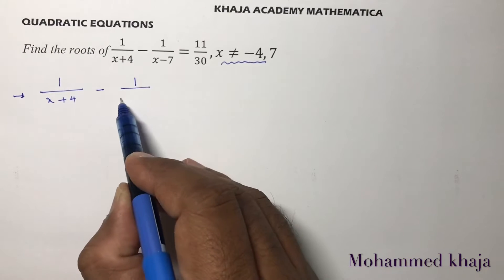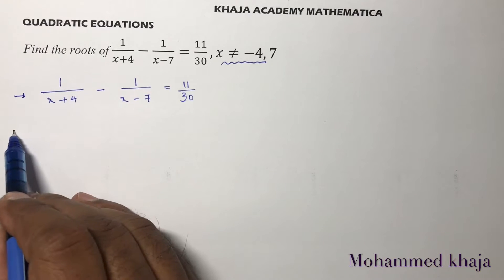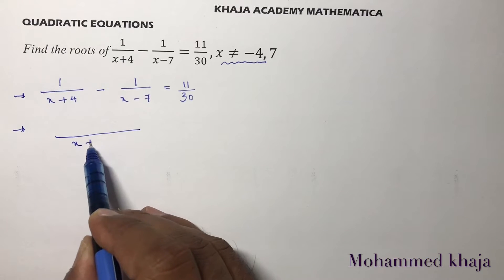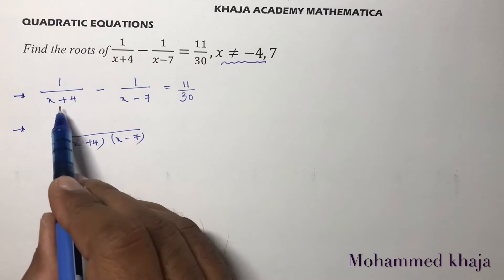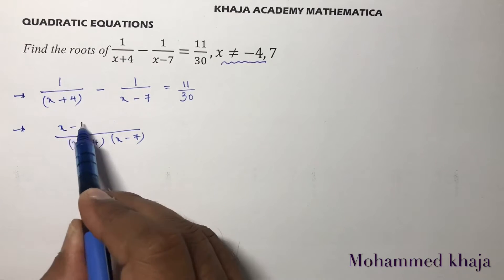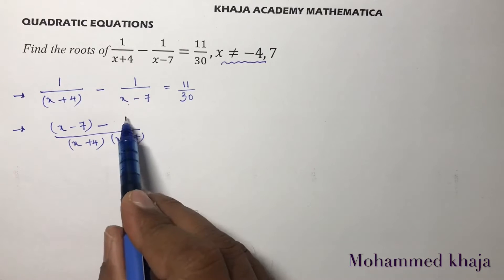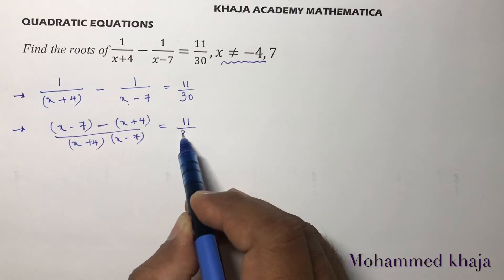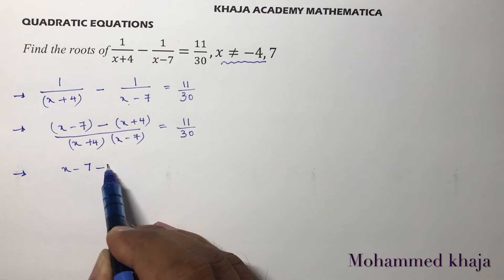Now we need to solve 1/(x+4) minus 1/(x-7) equals 11/30. For the two terms on the left, we take the LCM, which is (x+4)(x-7). So we multiply: the first term by (x-7) and the second term by (x+4), giving us [(x-7) minus (x+4)] over (x+4)(x-7) equals 11/30.